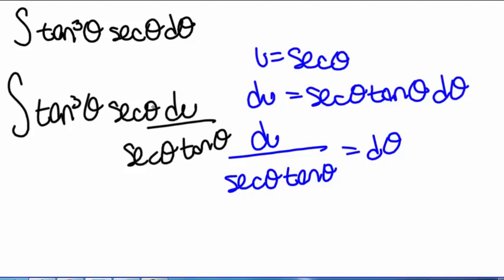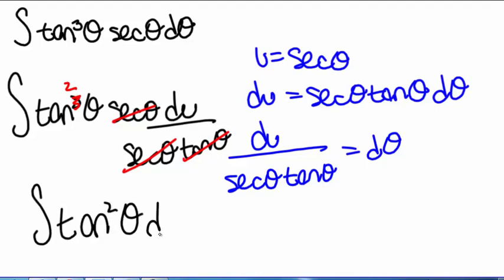We cancel out the secant terms and one of the tangent terms, leaving the integral of tangent squared of theta du. But we have theta and tangent remaining while our u is secant of theta. We might wonder if we chose the right u — but if we had chosen u to be tangent, our derivative would have been secant squared, and we only have one secant to cancel out.